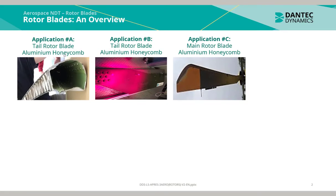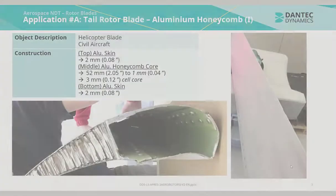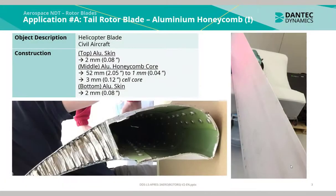These applications include aluminium honeycomb blades, which can either be of the tail rotor or of the main rotor. This is a helicopter blade taken from a civil aircraft. It consists of an aluminium honeycomb construction. The top aluminium skin is 2mm and the middle aluminium core is 52mm.